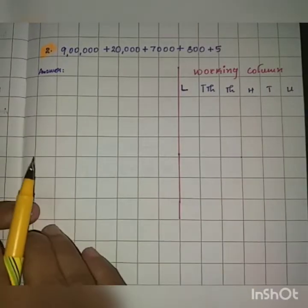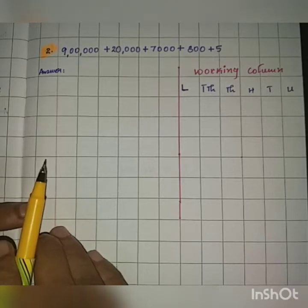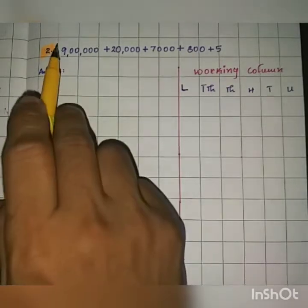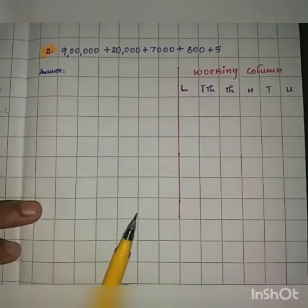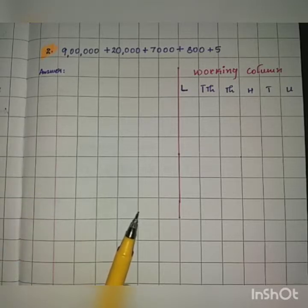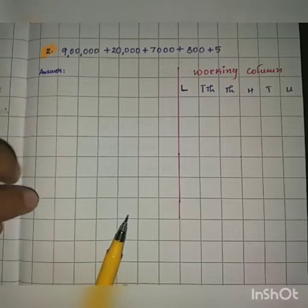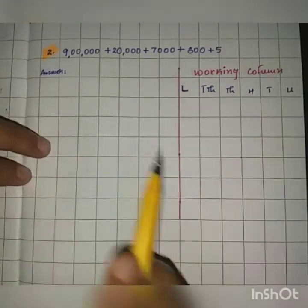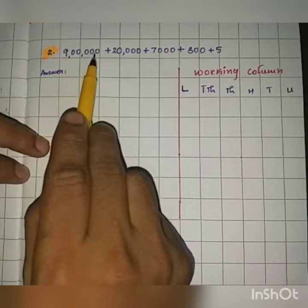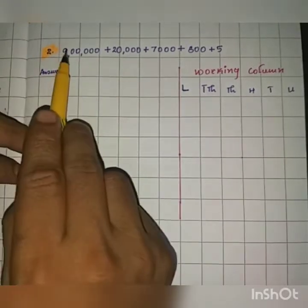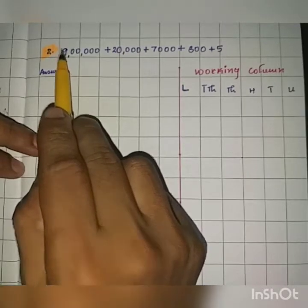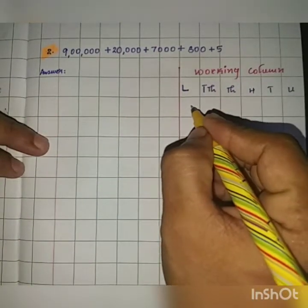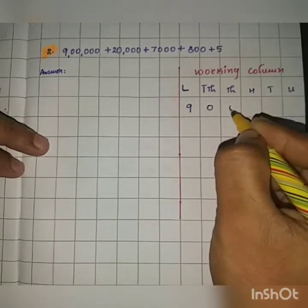Now let's look at the second example. We have nine lakh plus twenty thousand plus seven thousand plus eight hundred plus five — all are place values of the digits. The first place value is nine lakh, which uses units, tens, hundreds, thousands, ten thousands, and lakhs. So it is a six-digit number. We write nine lakh in the lakhs place.